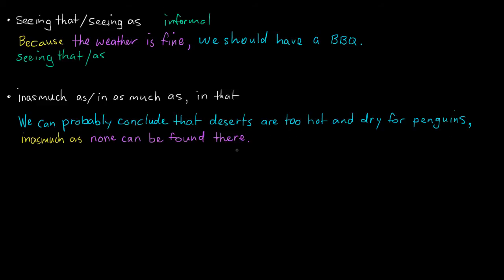We can probably conclude that deserts are too hot and dry for penguins, inasmuch as none can be found there. And by none we mean no penguins. So what we're actually doing here is giving more detail and expressing our idea with more clarity. So why can we conclude that deserts are too hot and dry for penguins? Because none are found there.